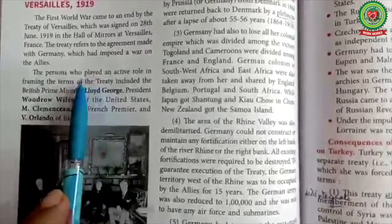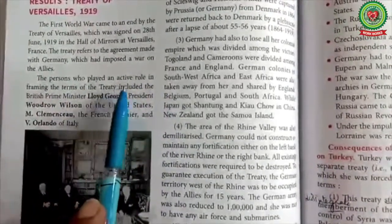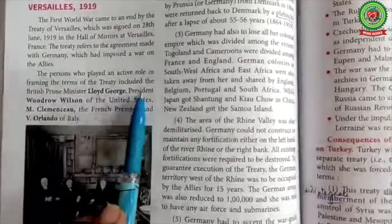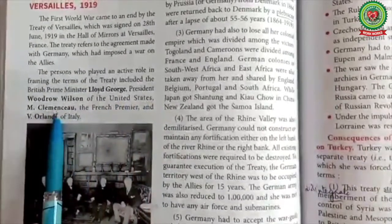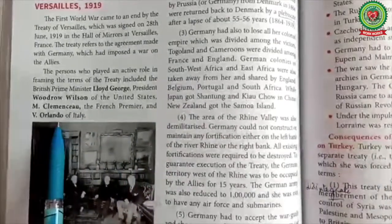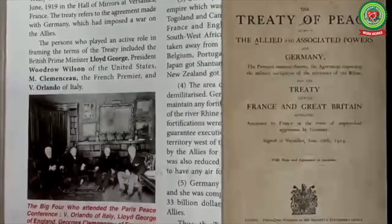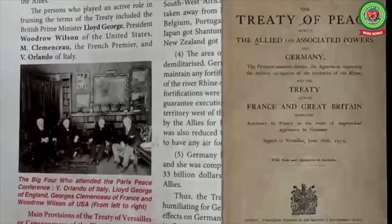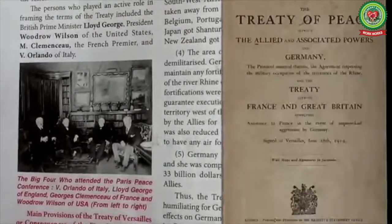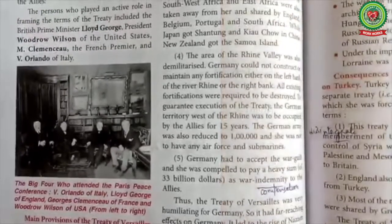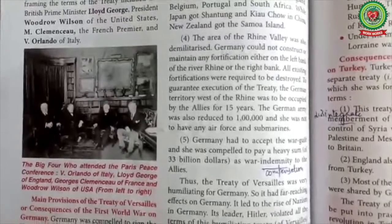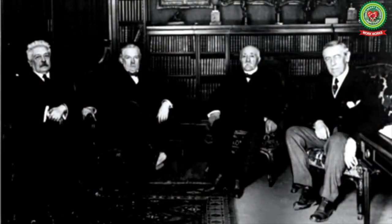The persons who played an active role in framing the terms of the treaty — the Big Four — included the British Prime Minister Lloyd George, President Woodrow Wilson of the United States, M. Clemenceau, the French Premier, and V. Orlando of Italy. The treaty took force on January 10, 1920, and these four were the principal architects of the Treaty of Versailles.